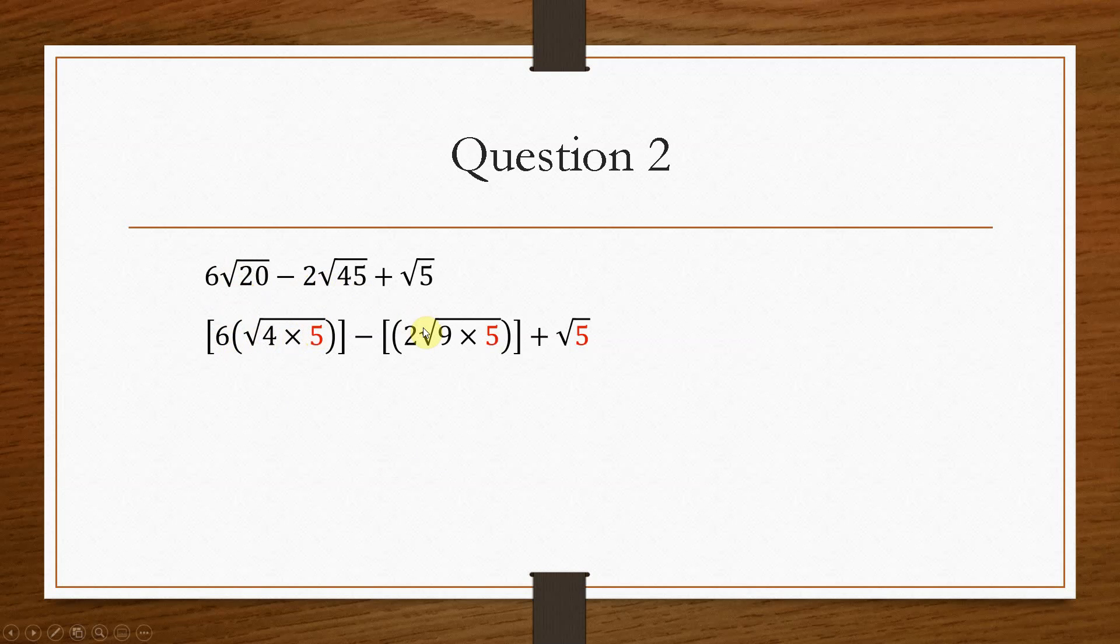And then likewise with this, keep the 2 out first, and then deal with, so 9 times 5, and that'll give us the 45, when we still incorporate the root 5, and this just stays as it is.